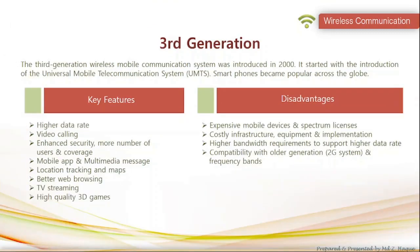The third generation system was developed in 2000, starting with the introduction of the universal mobile telecommunication system. Smartphones became popular in this generation. Key features were higher data rate, video calling, enhanced security, more users and coverage, supported mobile apps and multimedia messages, location tracking and maps, better web browsing, TV streaming, and high quality 3D games. Disadvantages included expensive spectrum licenses, costly infrastructure, equipment and implementation, higher bandwidth requirements, expensive mobile devices, and compatibility issues with other generations and frequency bands.